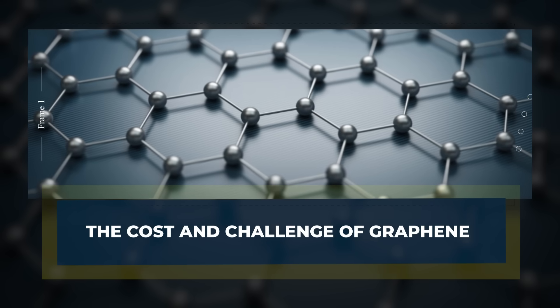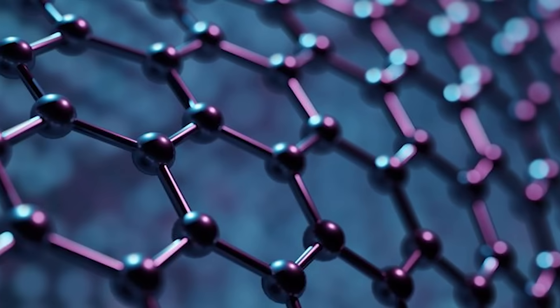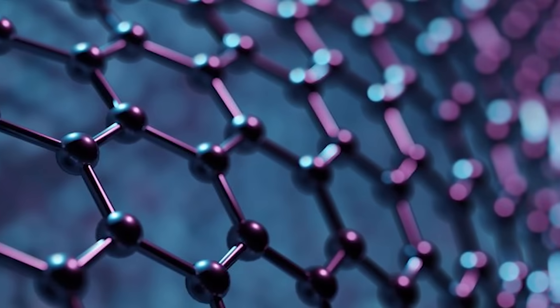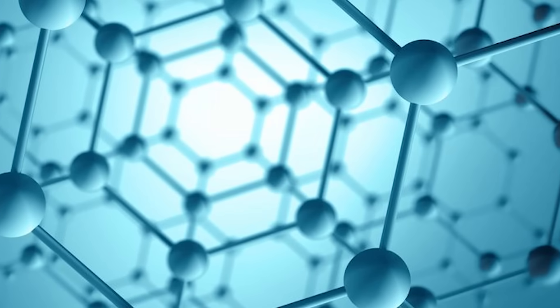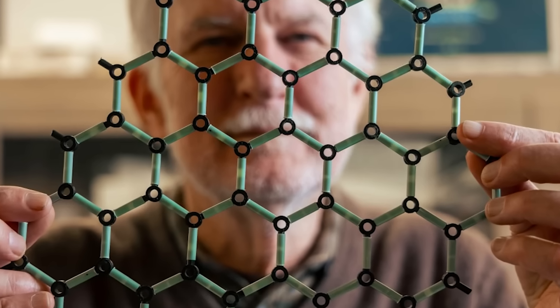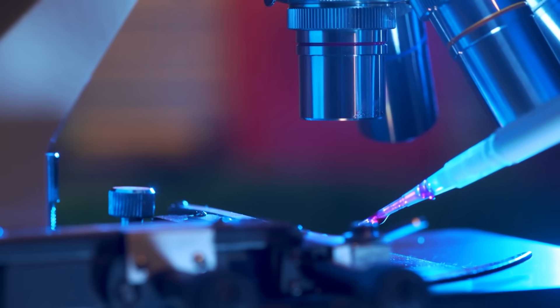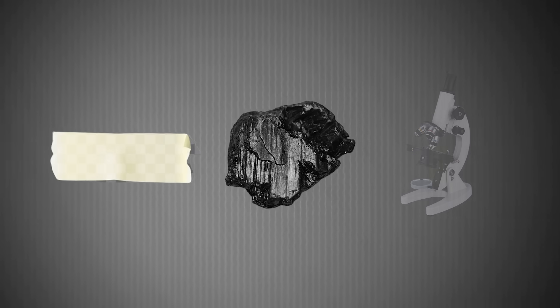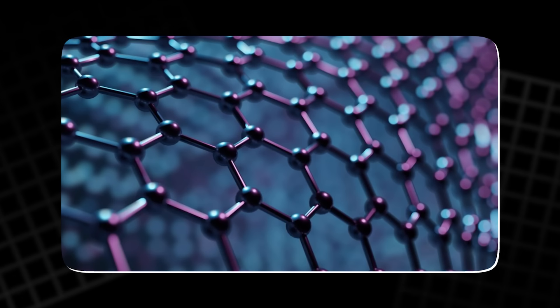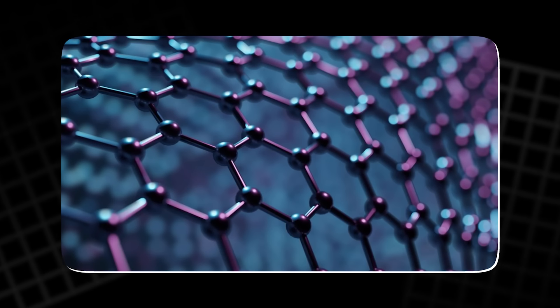If graphene is so powerful, so perfect, why isn't it everywhere? The answer is hidden in the process. Making graphene in a lab is simple: a strip of tape, some graphite, and a microscope. But making it for the world? That's something else entirely.